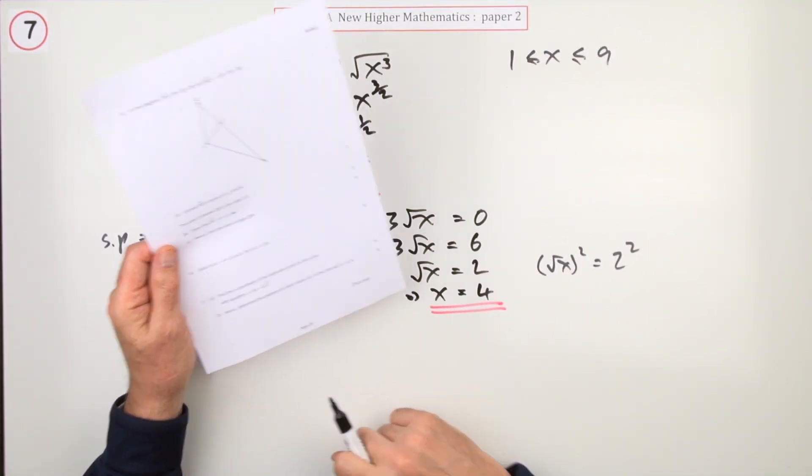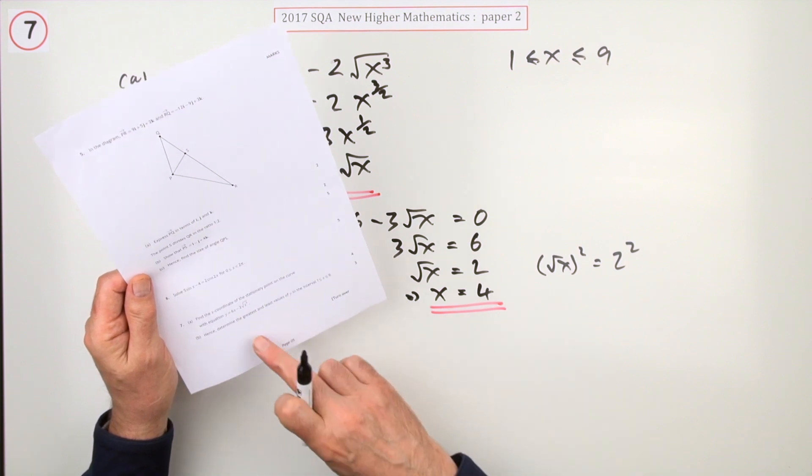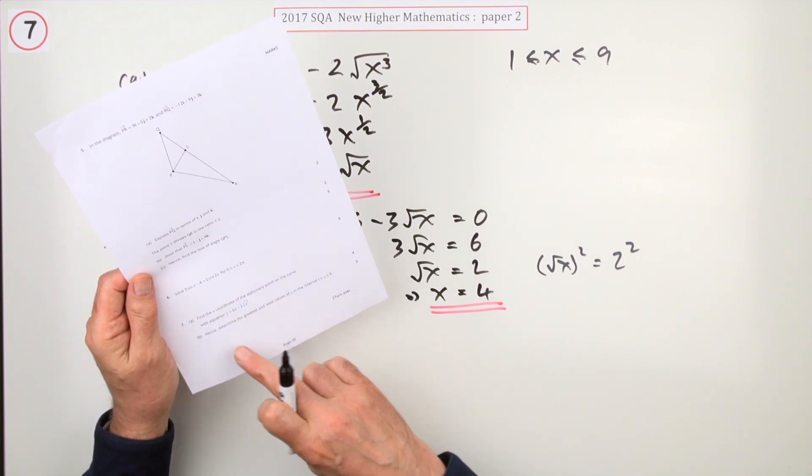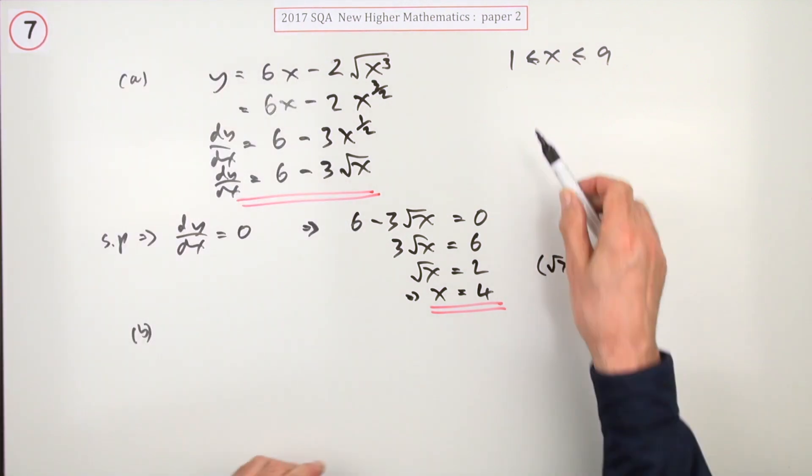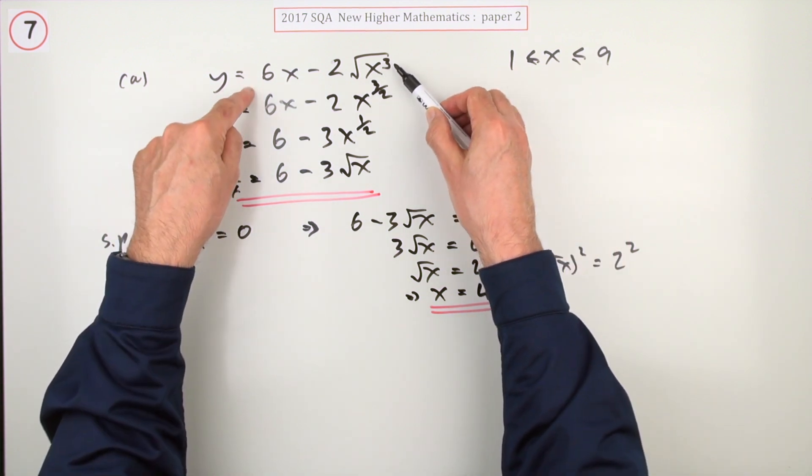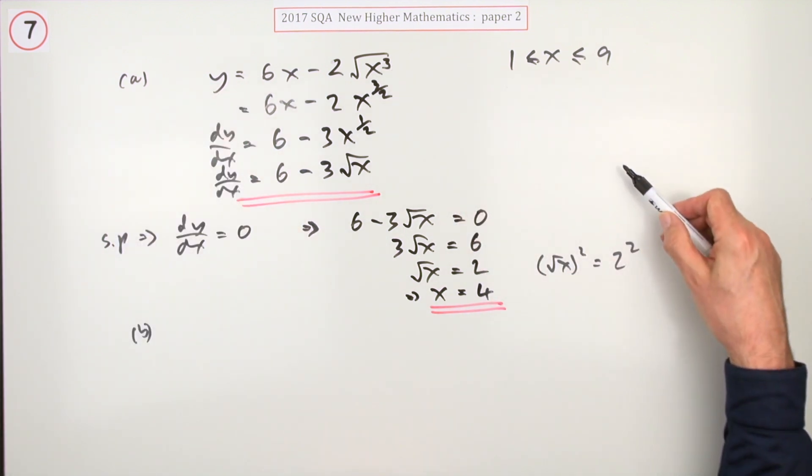Now B, I've not left myself much room here for this. For three marks, determine the greatest and least values. It says hence, that's because you're only looking at the values of y within this interval between one and nine.